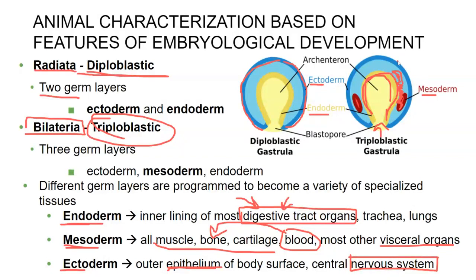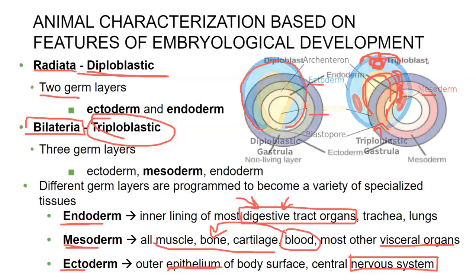That sounds wild, but it makes sense because your ectoderm will actually dip and then close in, creating a hollow tube down the middle, which will eventually become the brain and the spinal cord in animals that have spinal cords.